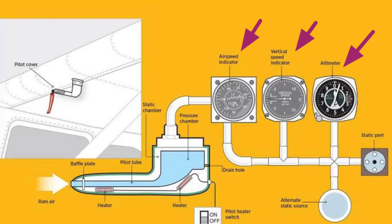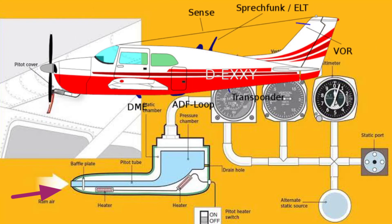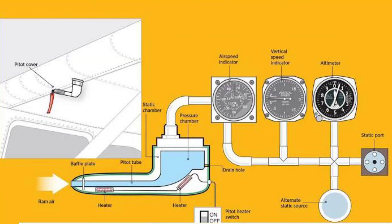The altimeter, airspeed indicator, and vertical speed indicator are the three most common Pitot Static instruments. A Pitot tube is open and faces into the airstream to receive the full force of the impact air pressure as the aircraft moves forward. This air passes through a baffle plate designed to protect the system from moisture and dirt entering the tube.